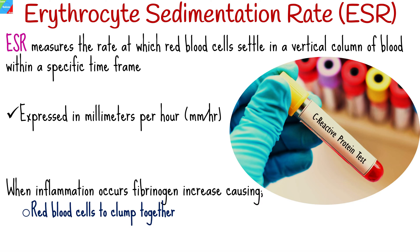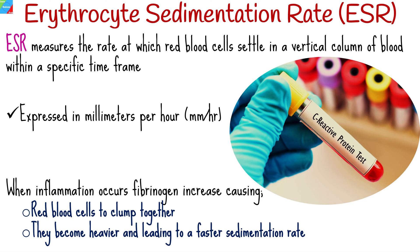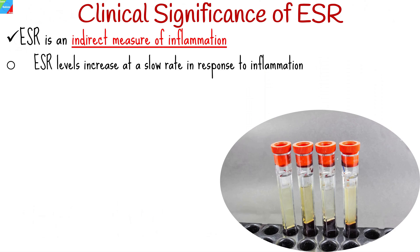When inflammation occurs, certain proteins in the blood, particularly fibrinogen, increase. These proteins cause red blood cells to clump together, making them heavier and leading to a faster sedimentation rate. ESR is an indirect measure of inflammation.